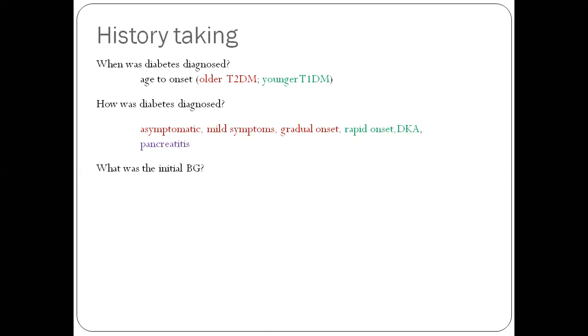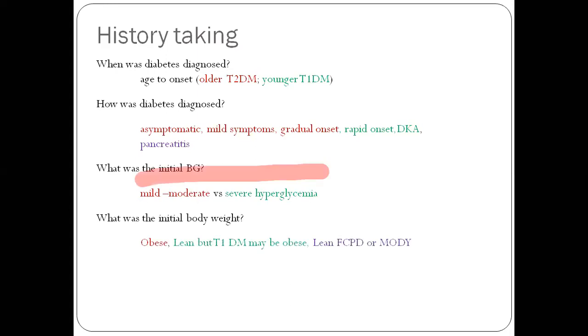What was the initial blood glucose? When was the first blood glucose? What was the value? If it was only mild to moderate, 200 kind of range, think of type 2 diabetes. If it was 500 or 500 plus, severe hyperglycemia, think of type 1 diabetes. What was the initial body weight? If the patient was obese at diagnosis, that points to type 2, but doesn't rule out type 1. If the patient was lean, it almost rules out type 2 but points towards type 1 diabetes. If the patient was lean, you can also think of FCPD or MODY.